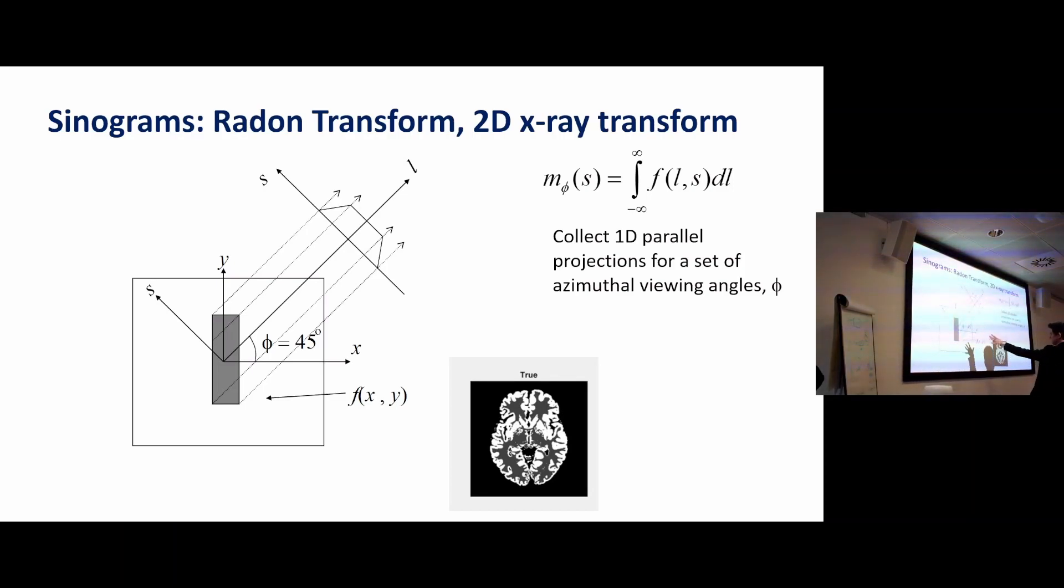This equation here is saying you've got some true object f of xy, a 2D continuous function, and what you do is consider it in some rotating coordinate system. We're just integrating along the axis L and preserving the position S from the center of the field of view. That's going to give us some projection value m for a fixed angle phi, and again you retain the distance S. So we're just doing a summation along one direction of our true object.